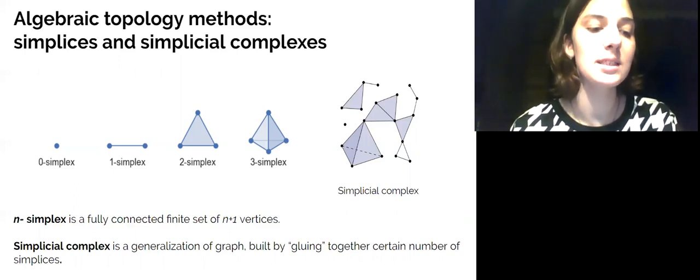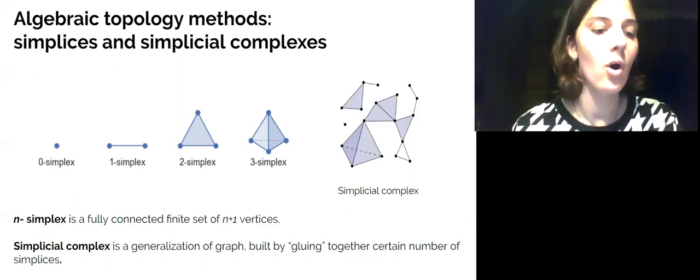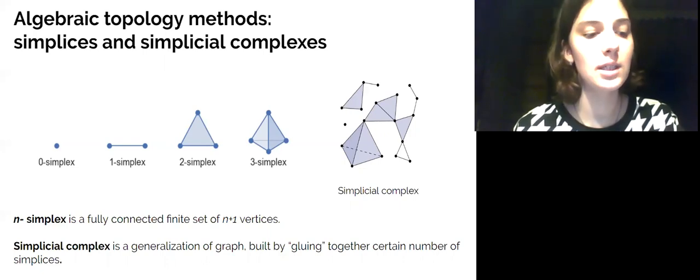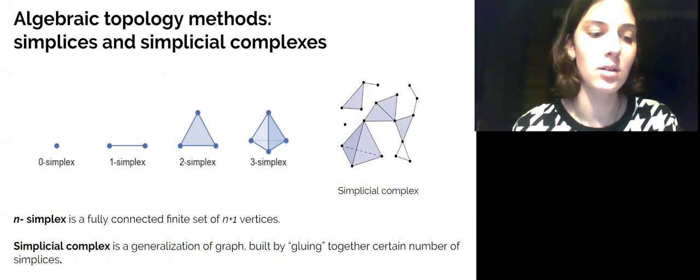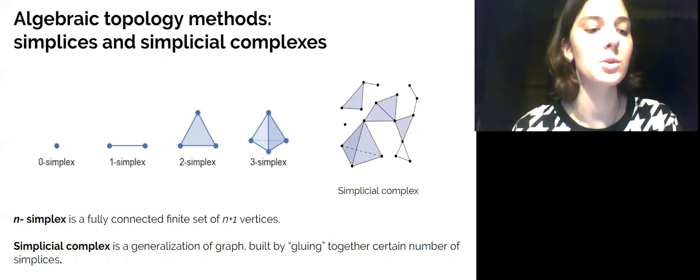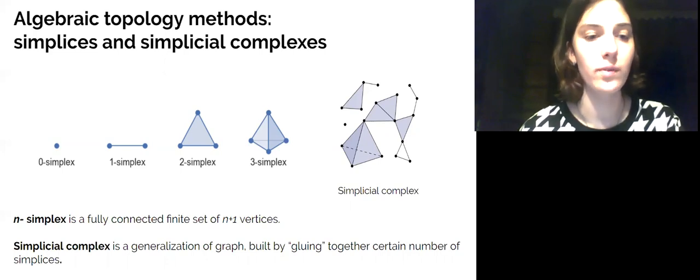N-simplex is a fully connected finite set of n plus 1 vertexes. Therefore, a single vertex is a zero-simplex, a standard edge which stands for one-simplex, triangle for two-simplex, etc. If we glue several simplexes together in accordance with certain conditions, one can get a simplicial complex, a geometric generalization of a graph.